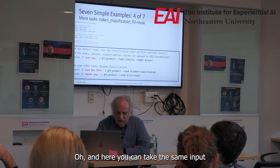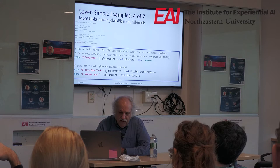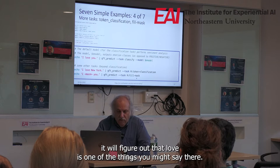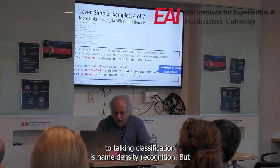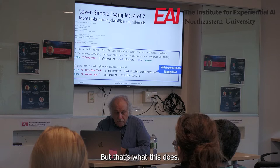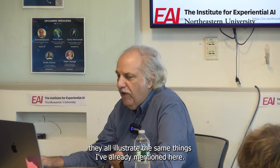You can take the same input and throw it into a different task. I can say 'I love New York' and with the NER model it would tell you that New York is a place. With fill-mask, if I say 'I love [MASK] you,' it will figure out that 'love' is one of the things you might say there, though I think it's not the top choice. People refer to token classification as named entity recognition, but I think named entity recognition really should go beyond just classifying each of the tokens. Fill-mask is an old task in linguistics that's well studied. There are hundreds of examples — they all illustrate the same things already mentioned.